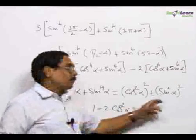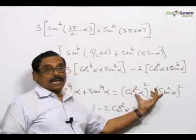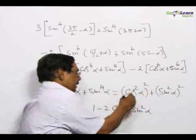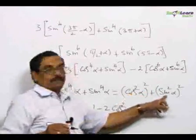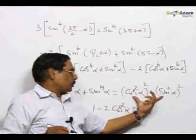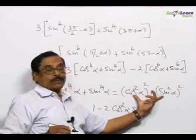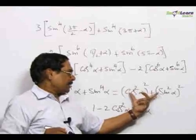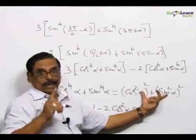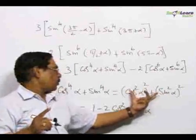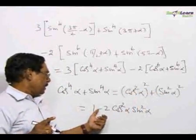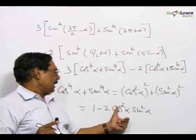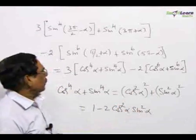I am sure you are following the simplification. I am using the formula a² + b² = (a + b)² − 2ab, where a = sin² α and b = cos² α. Since sin² α + cos² α = 1, we get 1² − 2cos² α · sin² α, which equals 1 − 2cos² α · sin² α.